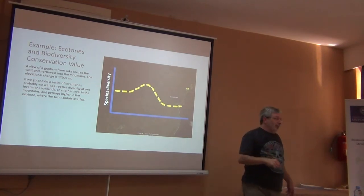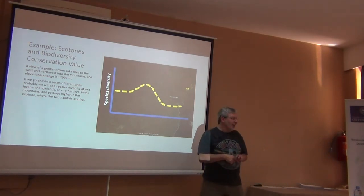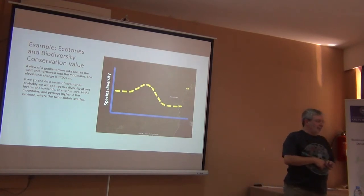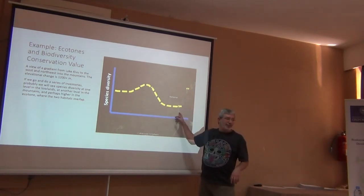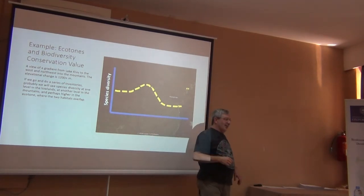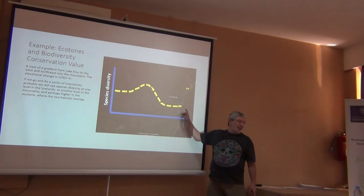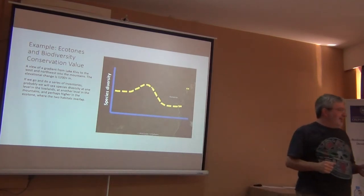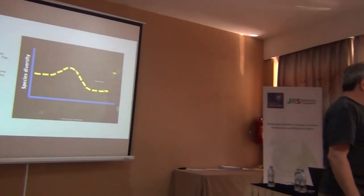If our goal is biodiversity conservation, we might use this as a very clear indicator of where to invest our resources. If you're looking at species diversity as the only indicator, the table shows the lowest species diversity at an interface of biomes — so you'd want to have very high species diversity in that space.